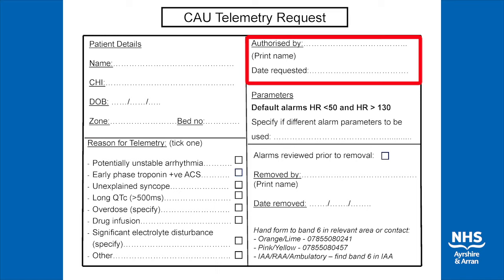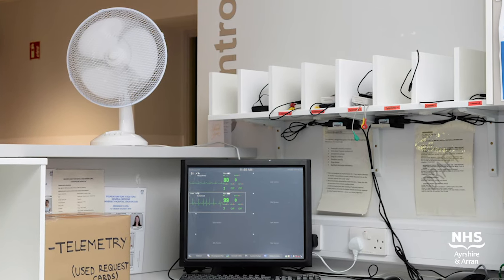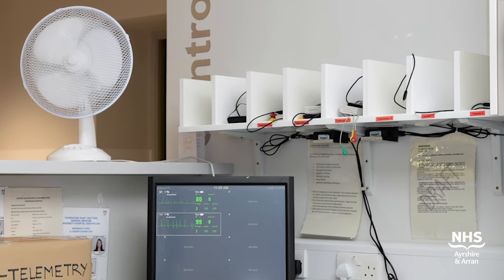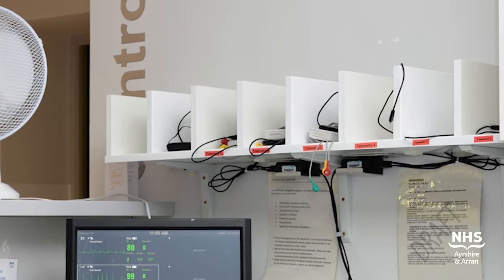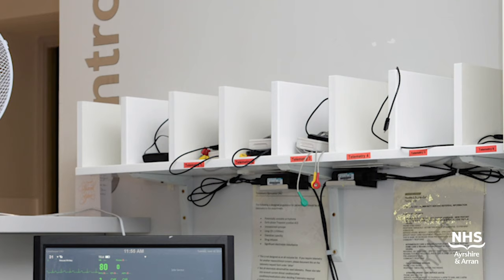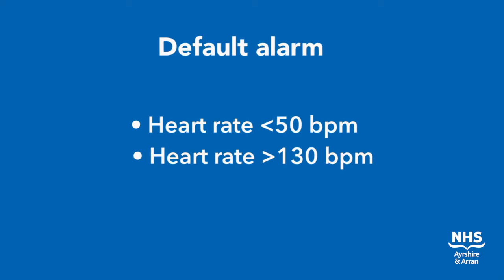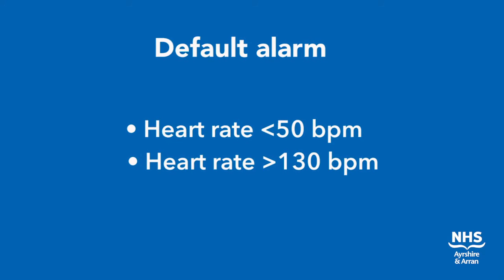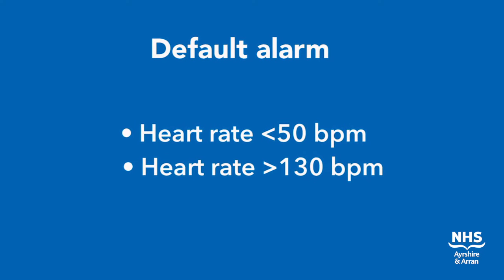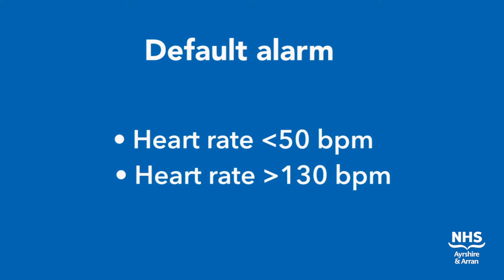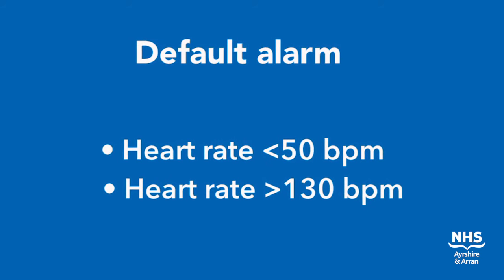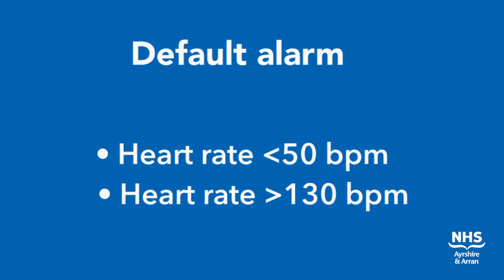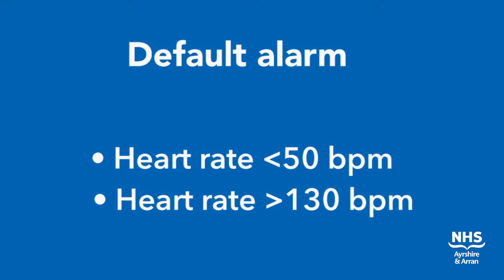The requesting doctor must fill out their name and the date of the request. Whilst the patient remains on telemetry, this card should be housed within the relevant ducat on the telemetry shelf within the initial assessment unit. The default tachycardia and bradycardia alarms in CAU are heart rate less than 50 and heart rate greater than 130 beats per minute. This is to minimise multiple alarms for mild brady or tachycardias.